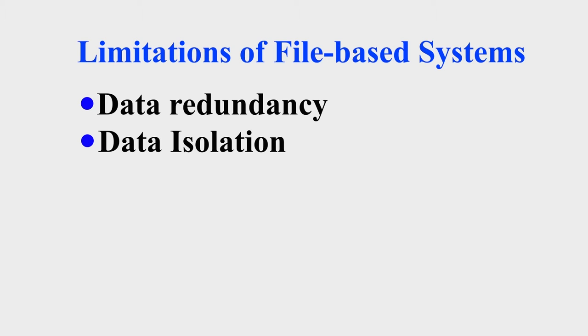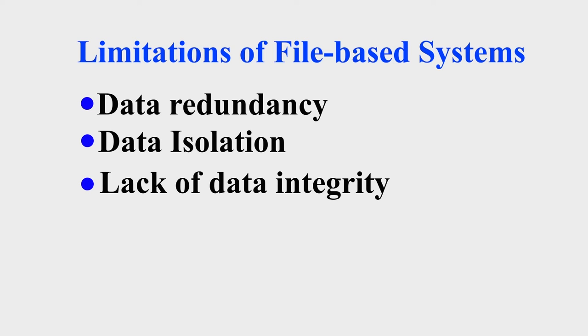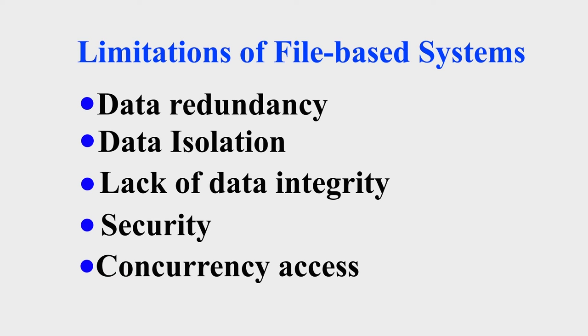Another problem with file-based systems was data isolation — each data set was isolated in its own place, not shared and not related. There was also a lack of data integrity and problems with security, as there were no security mechanisms within file-based systems. Finally, a file-based system did not allow concurrent access — only one user could access the data at a time in order to allow updates and maintain a correct version of that particular file.